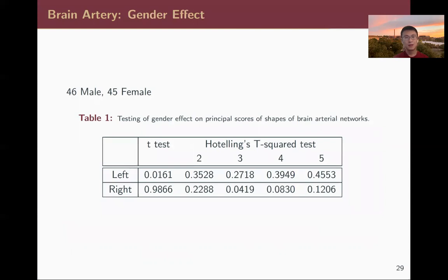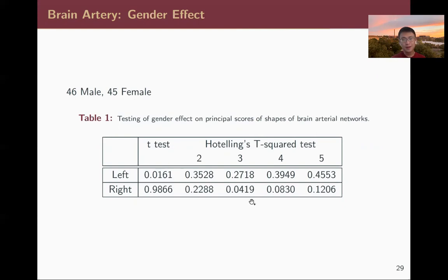Since we have PCA and covariate information, we perform statistical testing. We project the 92 subjects into the first five principal subspaces and perform two-sample t-tests and Hotelling T² tests, testing whether male brain arteries differ from female brain arteries for the left and right components. We observe some low p-values, but overall the p-values are relatively large — we don't observe strong gender differences in shape.